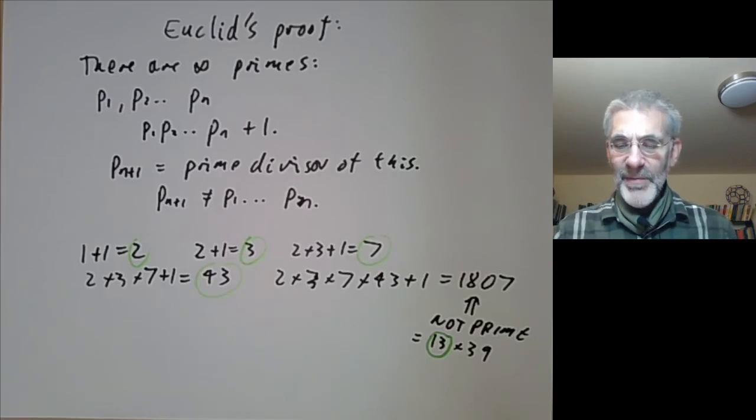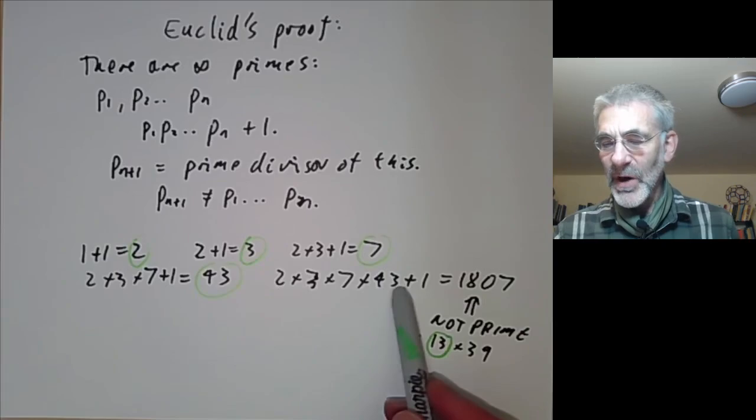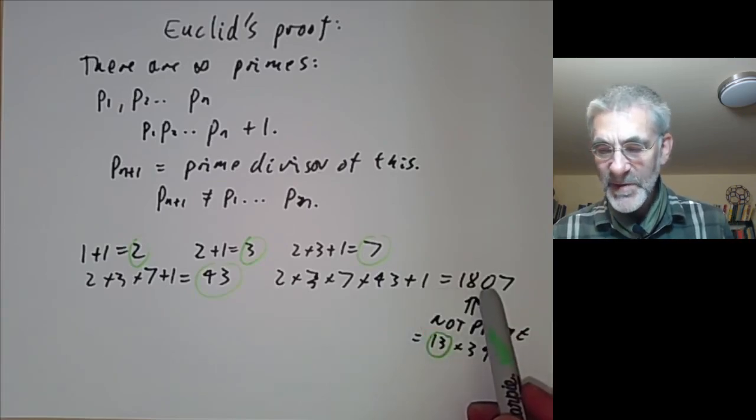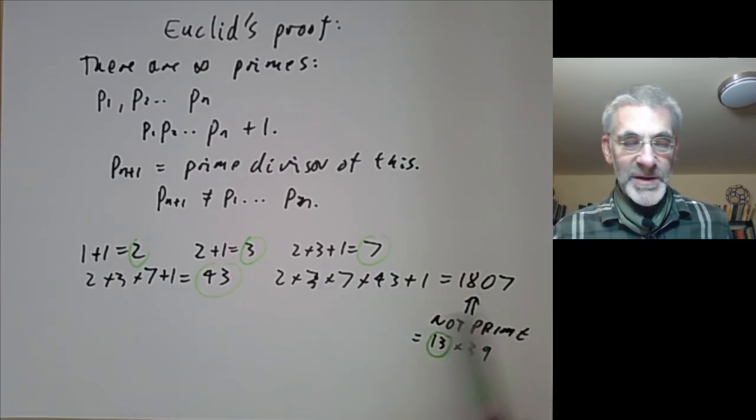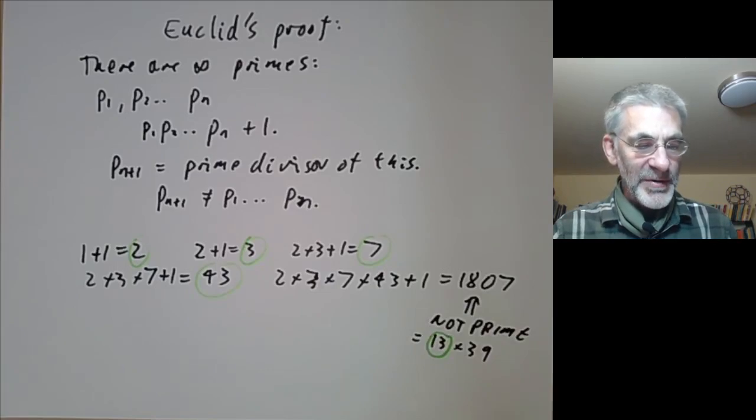It seems to be a common error by people who think that if you multiply all the primes you thought of and add 1 then that's always prime. But as you see from this example that's not actually true in general.